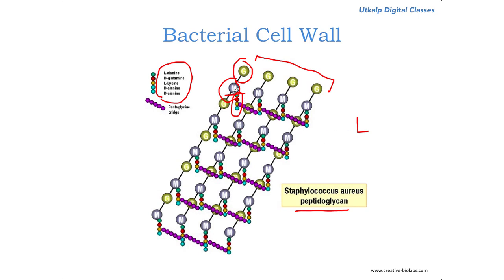As mentioned, to each N-acetyl muramic acid residue there is a peptide of three to five amino acids linked. Each of these peptide chains is linked to the other peptide chain through a pentaglycine bridge — five glycines which link these peptide chains together. This imparts the uniqueness to the bacterial cell wall.